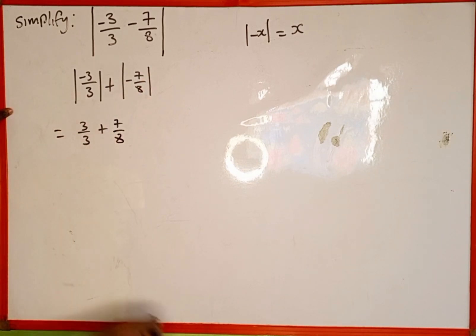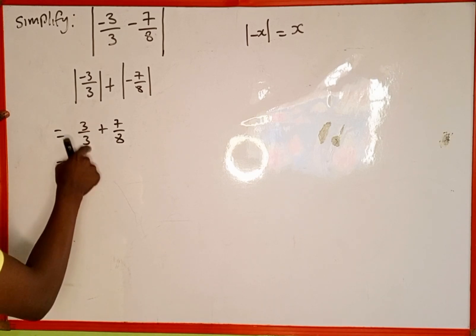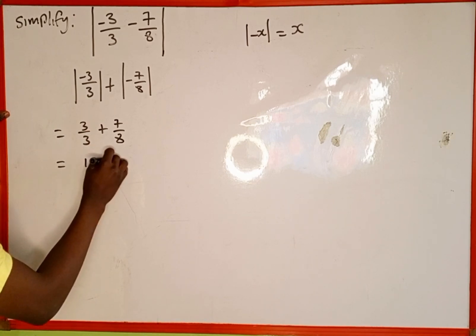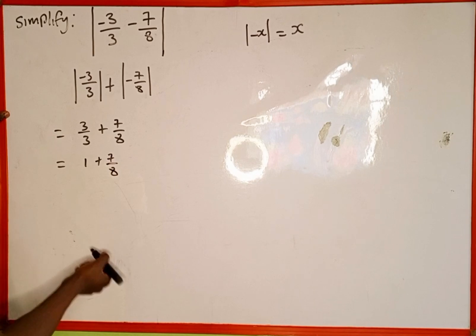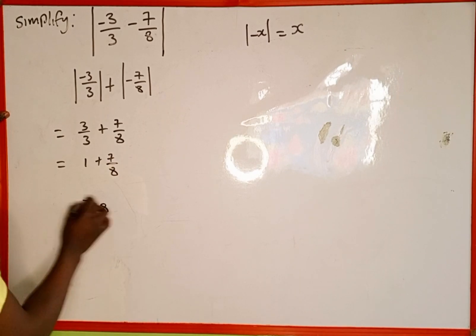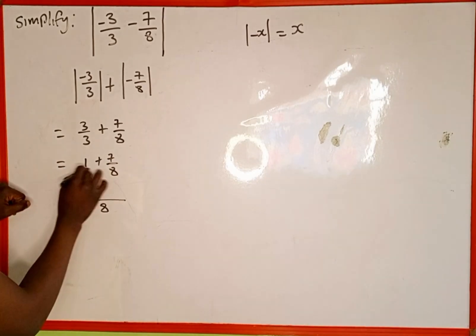So this is going to be equal to 3 divided by 3, which is 1, then plus 7 over 8. Then the LCM is 8, so we rule a division line. This 1 is the same as 1 divided by 1.